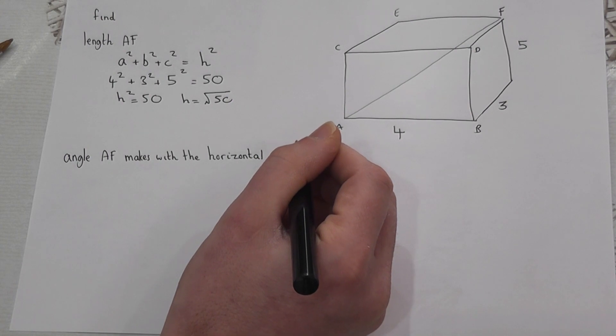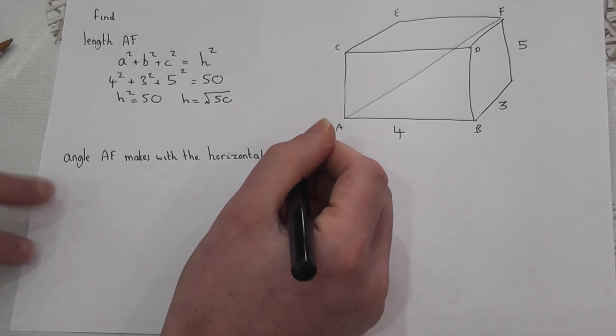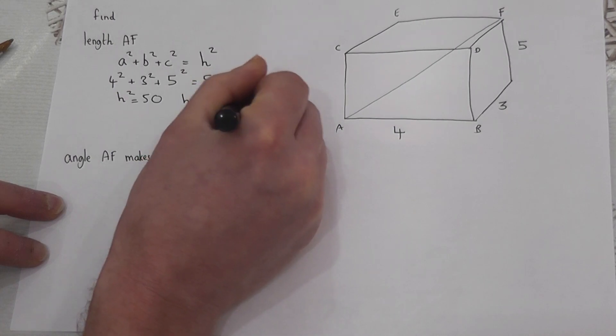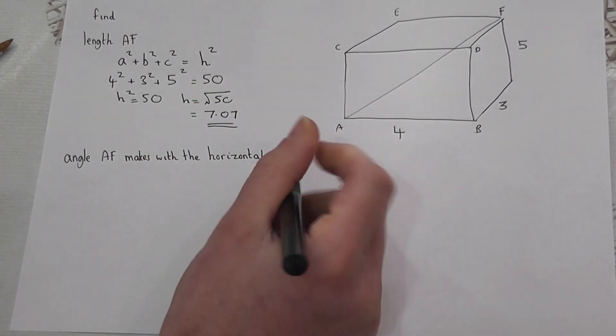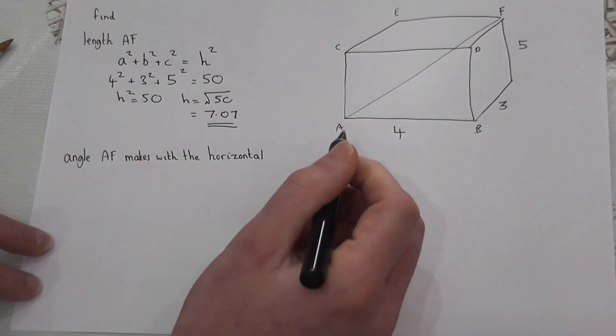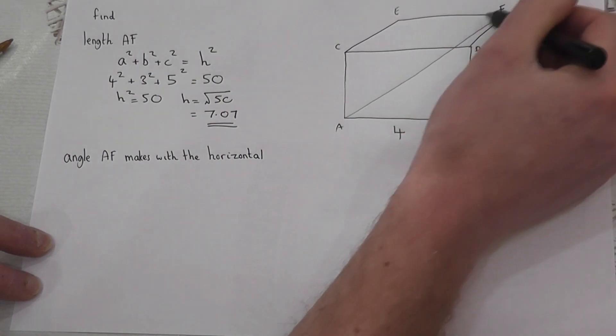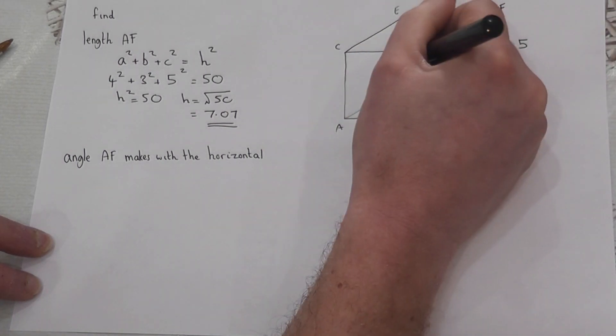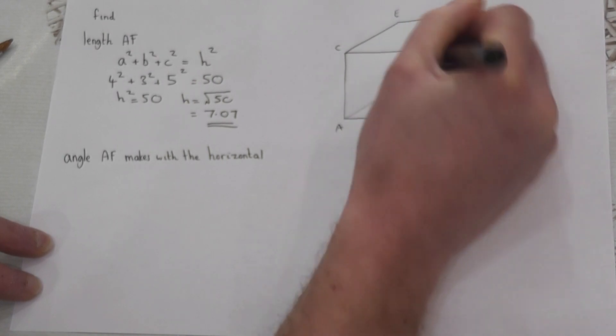Which just equals as a decimal 7.07 to two decimal places. So the length from A to F is just 7.07.